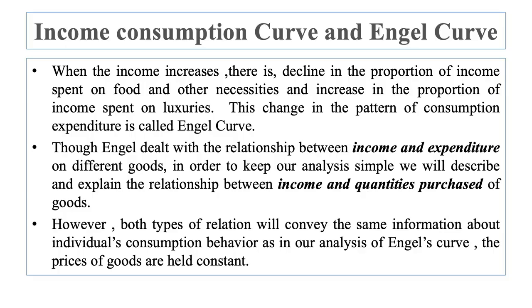This change in the pattern of consumption expenditure is called the Engel curve. Though the Engel curve dealt with the relationship between income and expenditure on different goods, in order to keep our analysis simple, here we will describe and explain the relationship between income and quantity purchased of goods. Both types of relation convey the same information about individual consumption behavior. In our analysis of the Engel curve, the prices of goods are held constant. The curve showing the relationship between the level of income and quantity purchased of particular commodities has therefore been called the Engel curve.